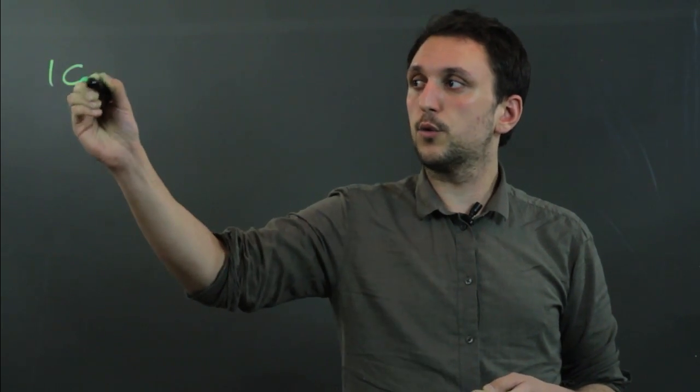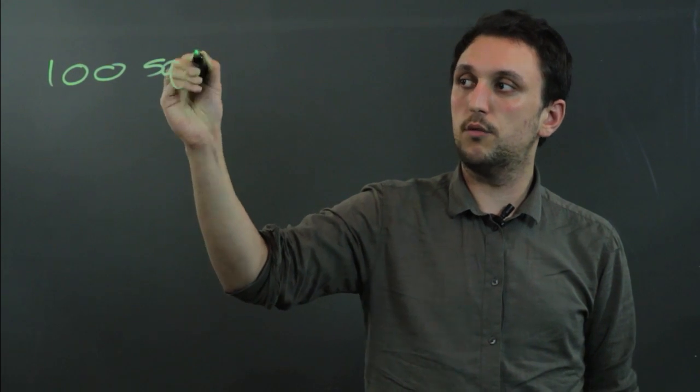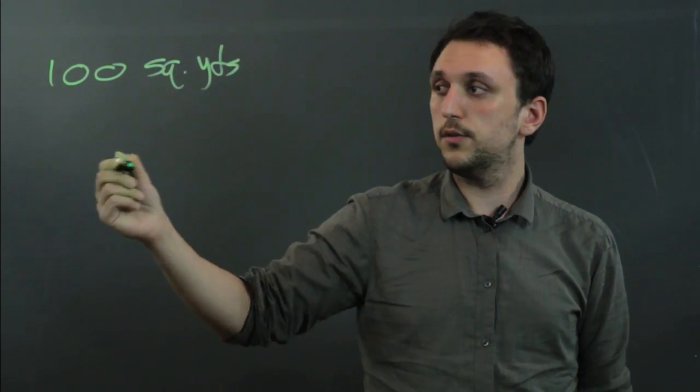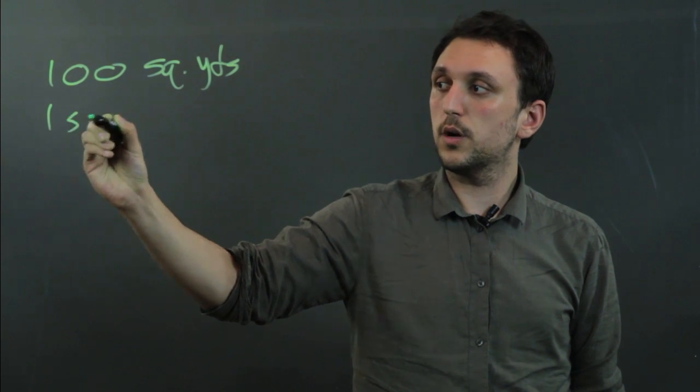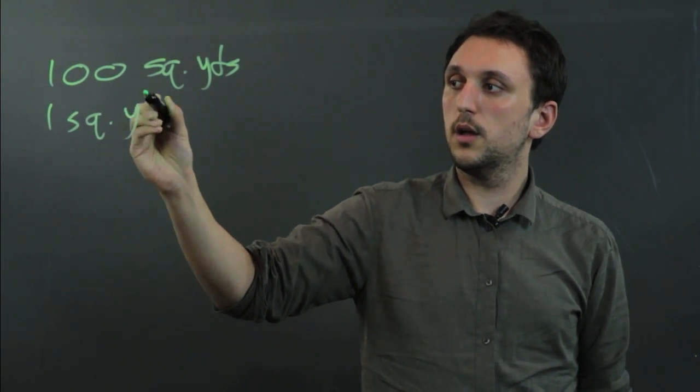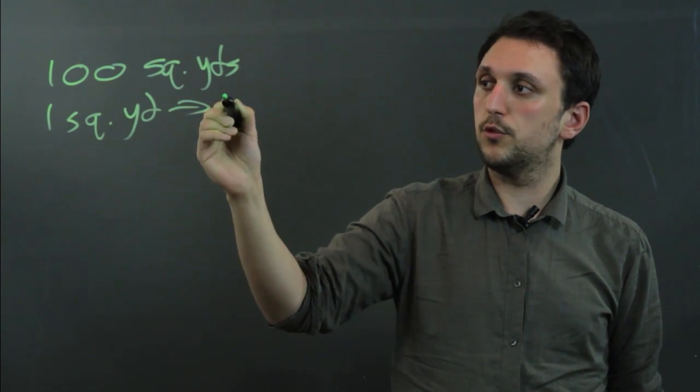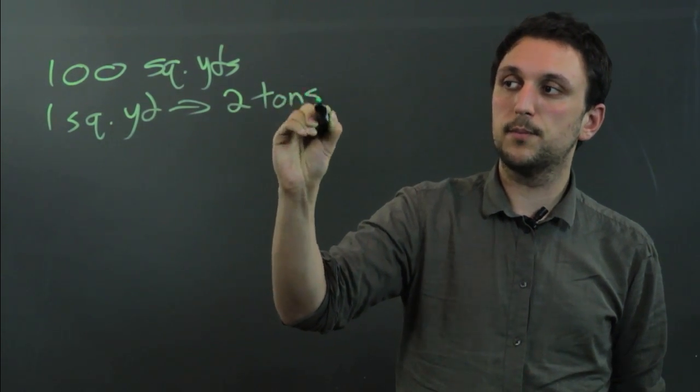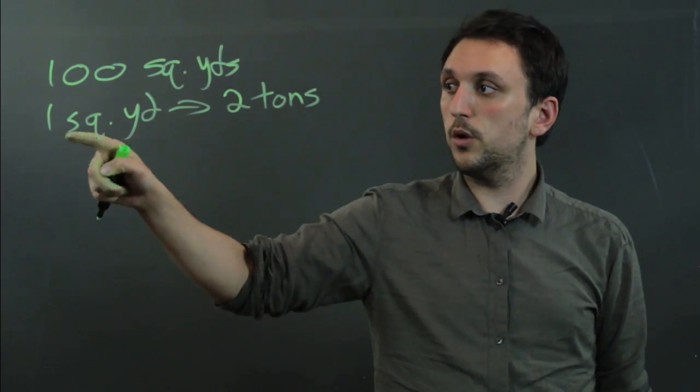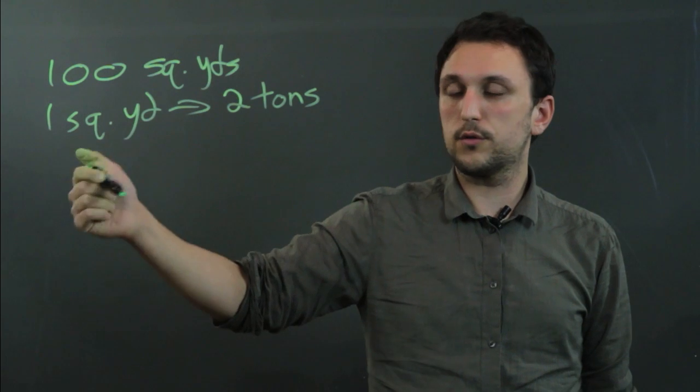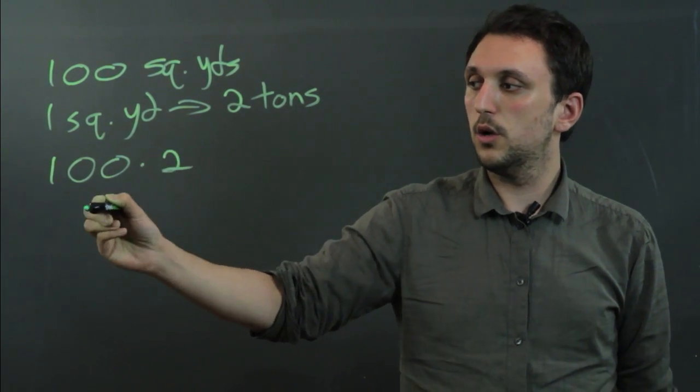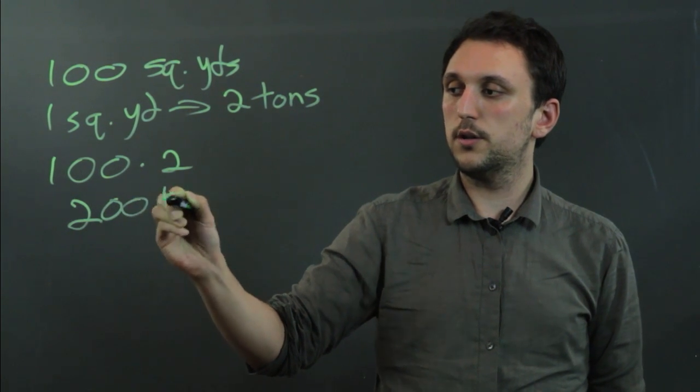So let's say we have 100 square yards of rock. And one square yard has two tons of rock. So if one square yard has two tons of rock, then 100 square yards is going to have 100 times 2, which is 200 tons.